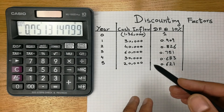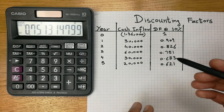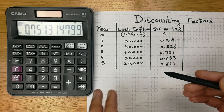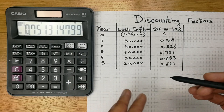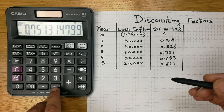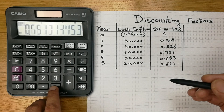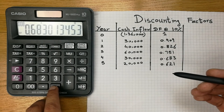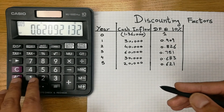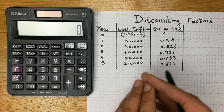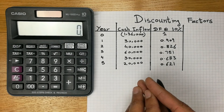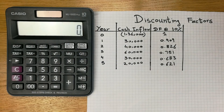This is really simple and it is really important to know how to calculate the discounting factors. You can use a simple calculator to find the correct answer. As you press the equal button you will keep getting the answers for the next years as well. That's all for today's video — I hope you enjoyed it. Please subscribe to my channel. Thank you very much.